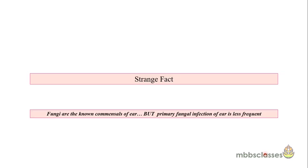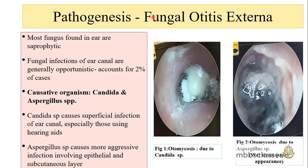Before we begin, let me tell you about one strange fact about the fungal diseases of the external ear. The fungi are the common known commensals of the ear, but primary fungal infection is less frequent. The fungal infections which occur in the ear canal are generally opportunistic in nature, and fungal otitis externa or otomycosis accounts for only 2% of the cases of otitis externa.